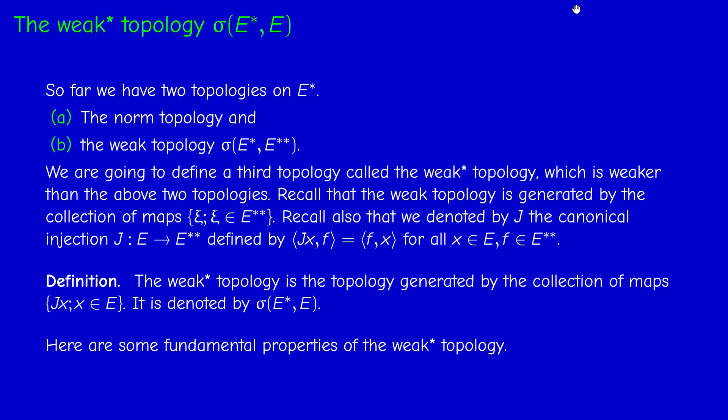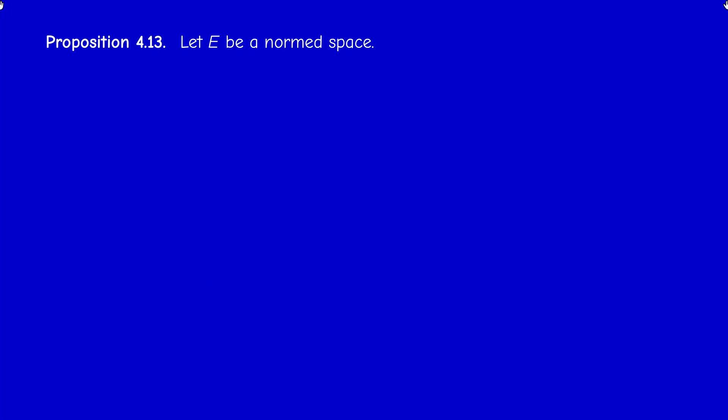We cannot talk about the weak-star topology on E unless E is itself a dual space. Let us establish some fundamental properties of this weak-star topology, similar to the weak topology properties from the previous section. First result: the weak-star topology is smaller than the weak topology, which is smaller than the norm topology.